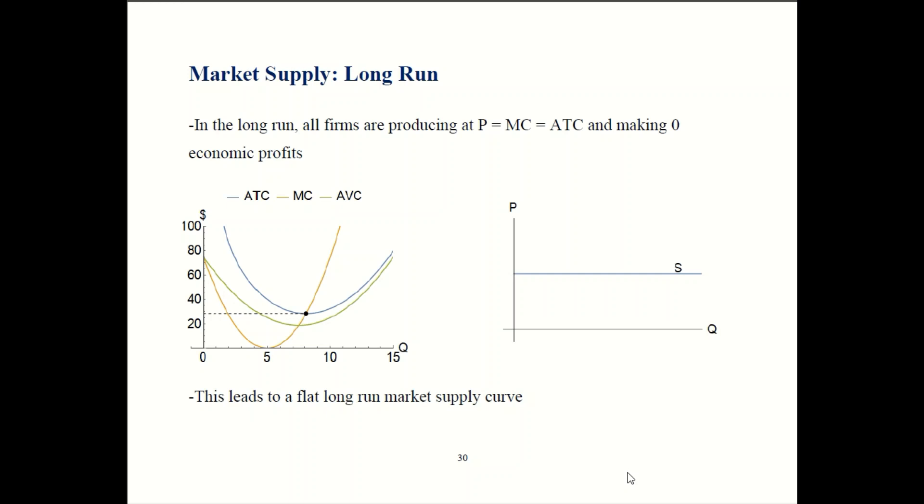So not too hard to put together the market supply curve in the short run. In the long run, here is what's going to happen. We established earlier this is the condition you have in the long run: price equals marginal cost is the profit maximization condition. We had the zero economic profits in the long run as well. Recall our intuition for that.